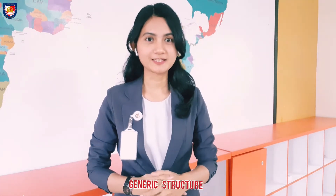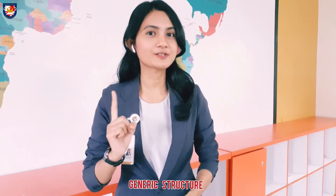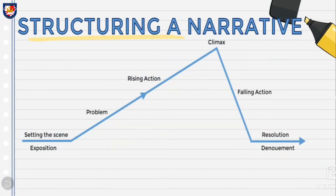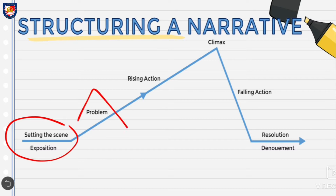Now let's take a look at the general structure of narrative. As you know, narrative text has four parts: the first one is orientation, second is complication, number three is resolution, and number four is coda or reorientation. I'll explain to you one by one. The first stage is orientation — it is the setting of the scene, where you introduce your characters, setting, and time of the story. Next you will have the problem and then the rising action.